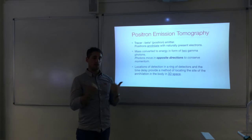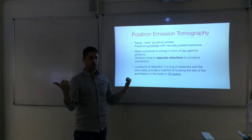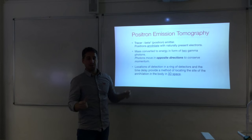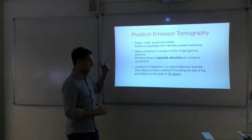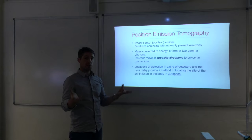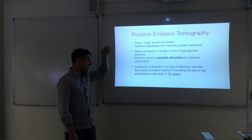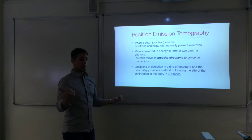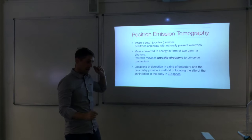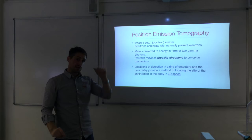The two gamma photons move in opposite directions to conserve momentum. If we have a ring of detectors that detects both photons and we measure the time difference between receiving them, we can use that to locate where they were emitted in the body in 3D space. Here's a schematic of the PET scan: the patient is in the middle surrounded by a ring of detectors, similar to the CAT scan. We get a pair of detections, say 1A and 1B, with a measured time difference delta T.